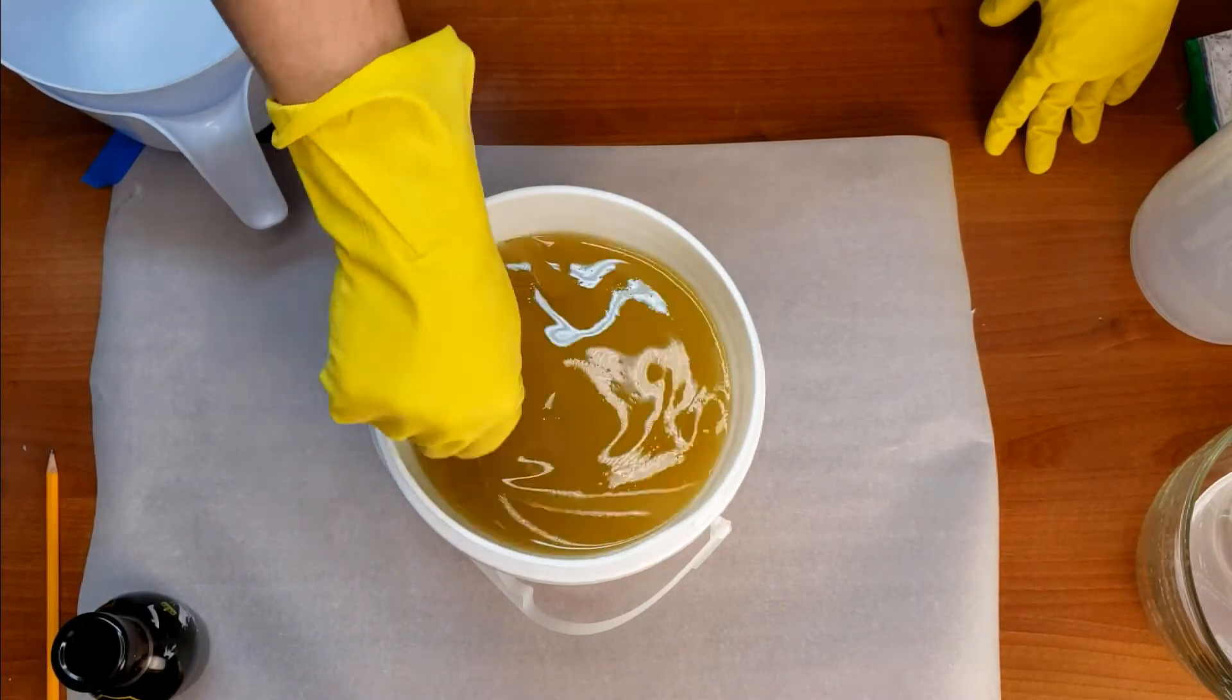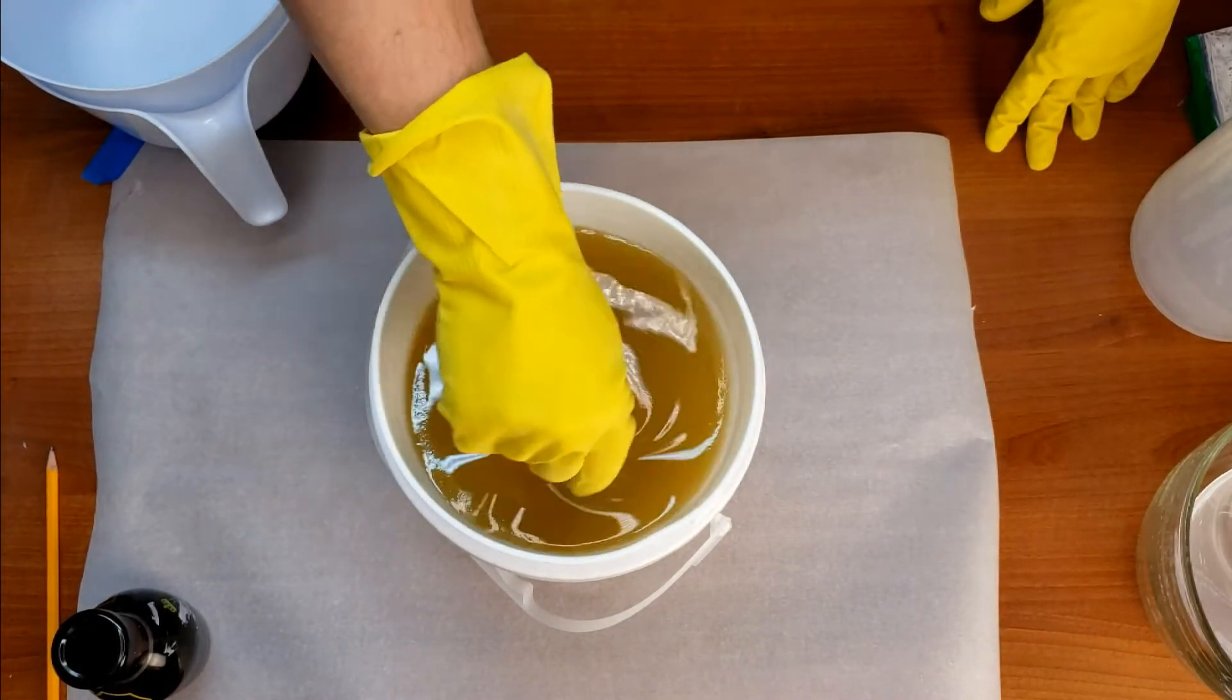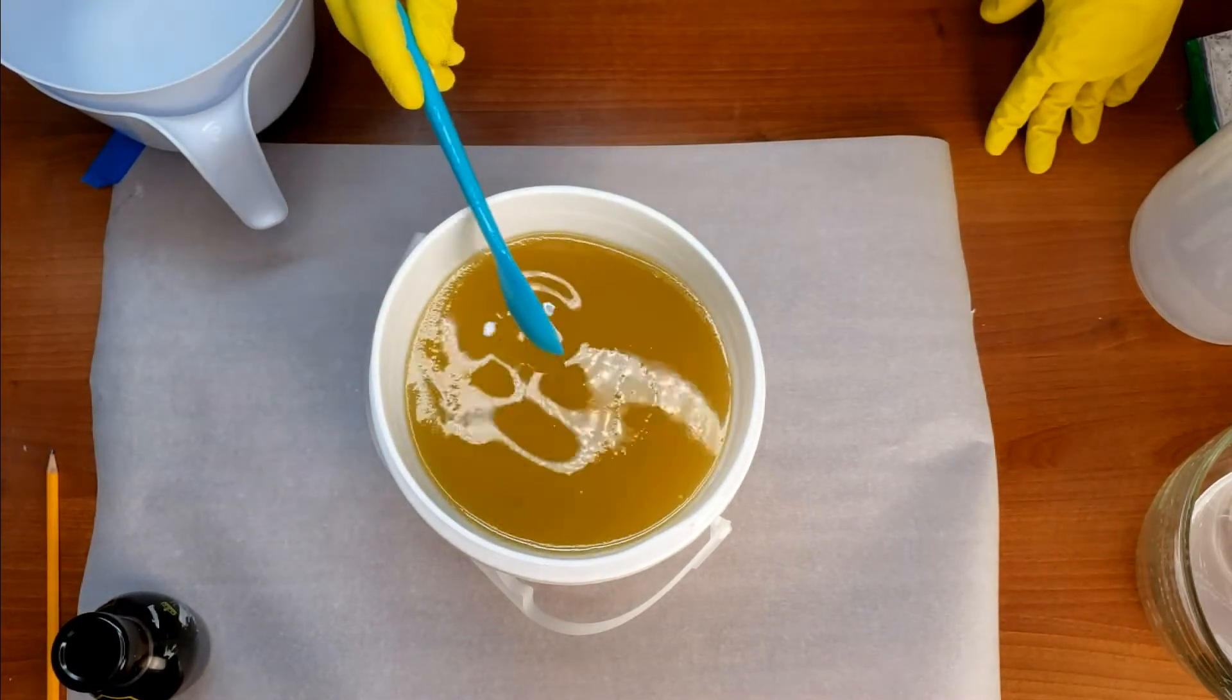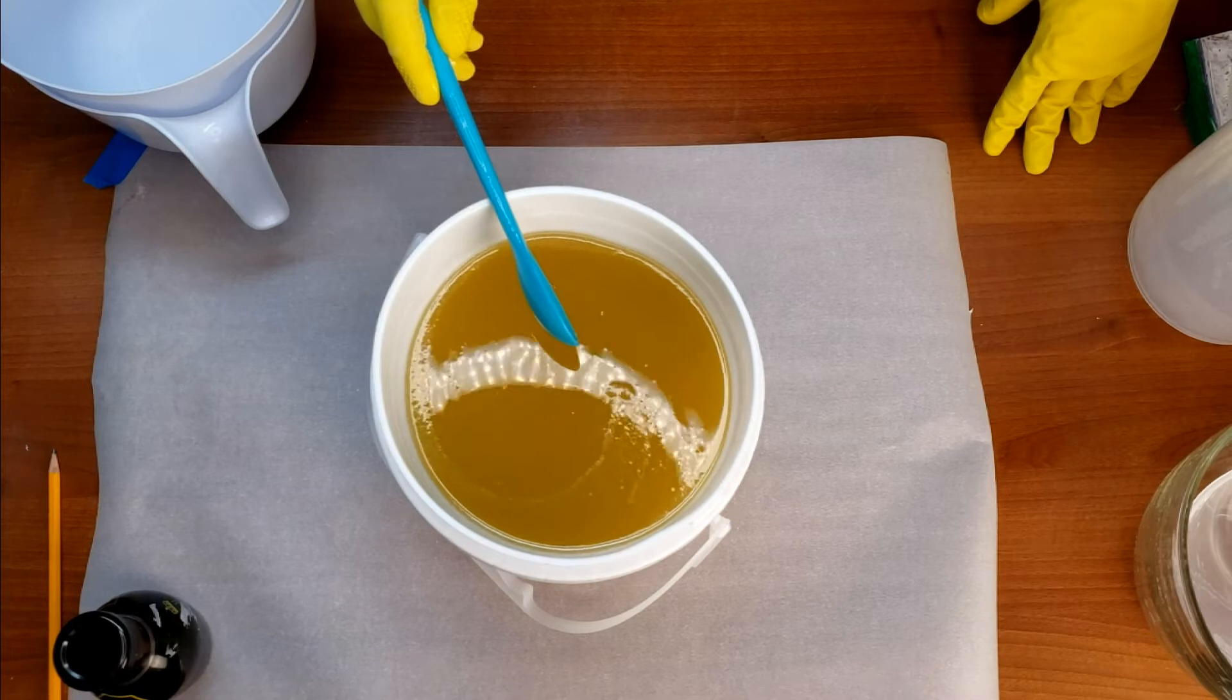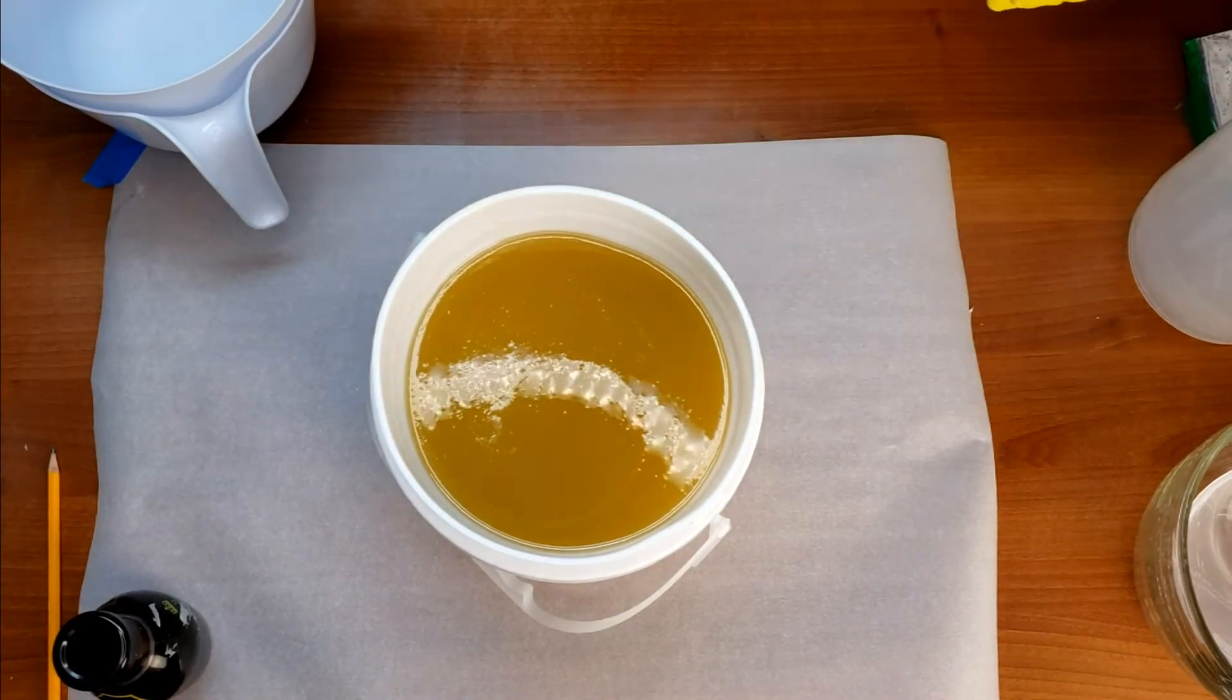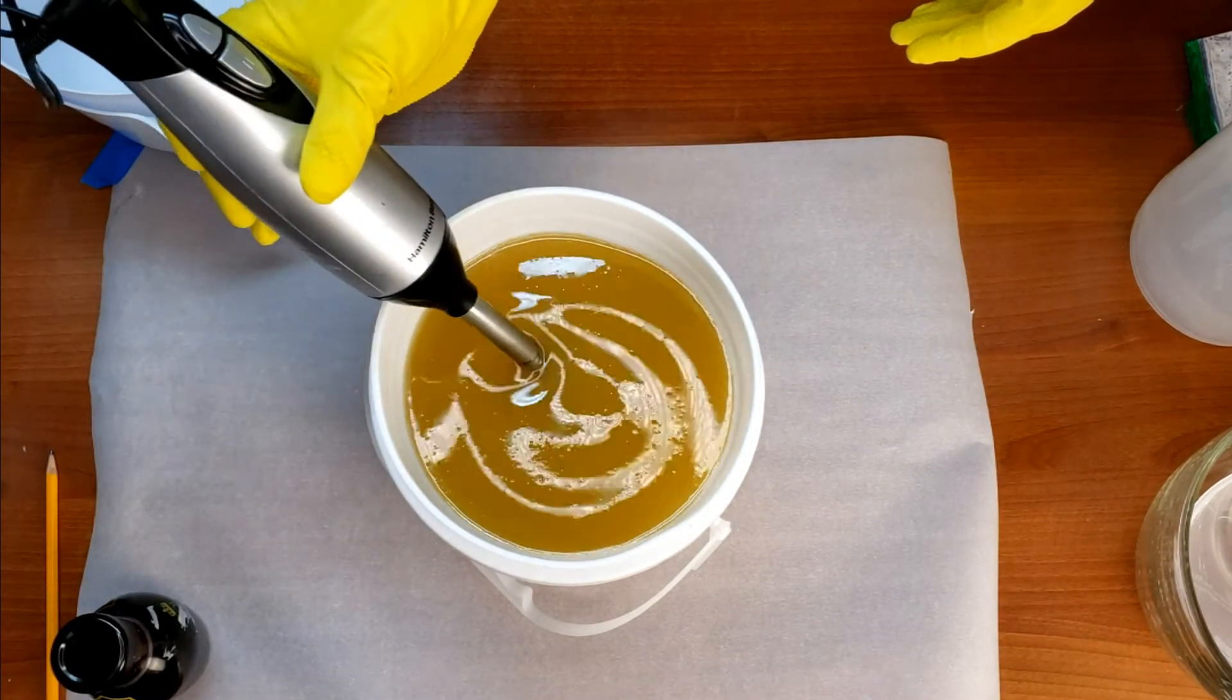Obviously this is sped up a little bit as I'm doing a lot of hand stirring. Pretty soon we'll get the stick blender in and then you'll really see the color change as it lightens into a nice creamy yellow color.